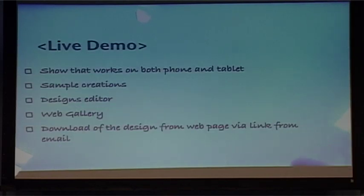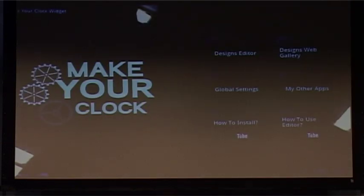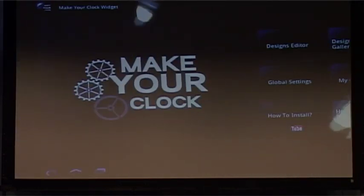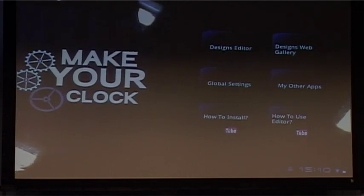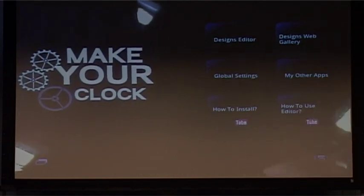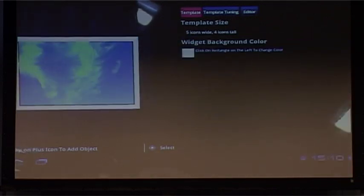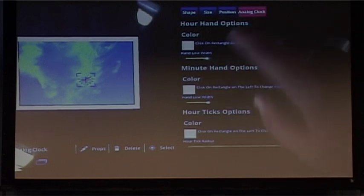The application is targeted to ordinary users, not developers. Now I will show the application. It's available for both phones and tablets, so it works on a small phone and also on a tablet. You can see there are a lot of differences in size but almost no differences in code. The application has two most important parts. First is the design editor where you can select the size of the widget and take components like an analog or digital clock.